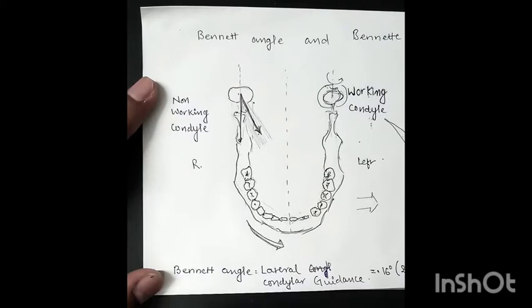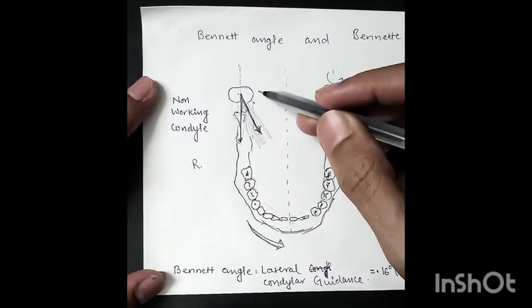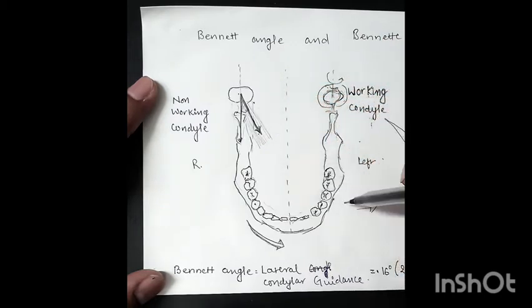Hey guys, so today we will discuss Bennett angle and Bennett movement. This is our mandible, this is the left side of the patient and right side of the patient. When the mandible moves to the left side, this will be our working condyle and this is the non-working condyle.